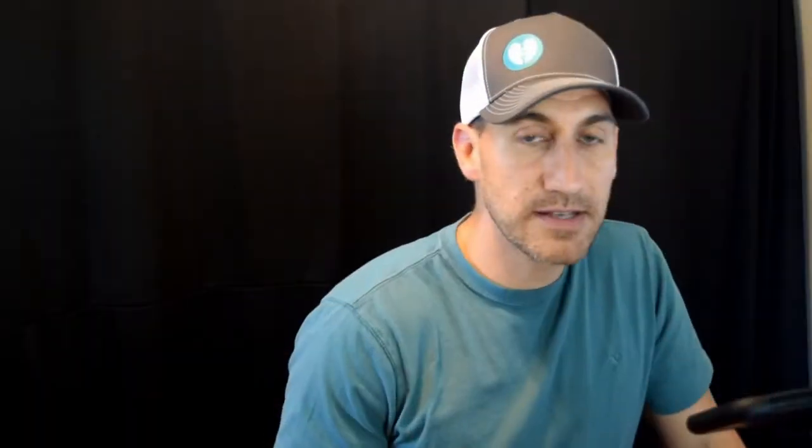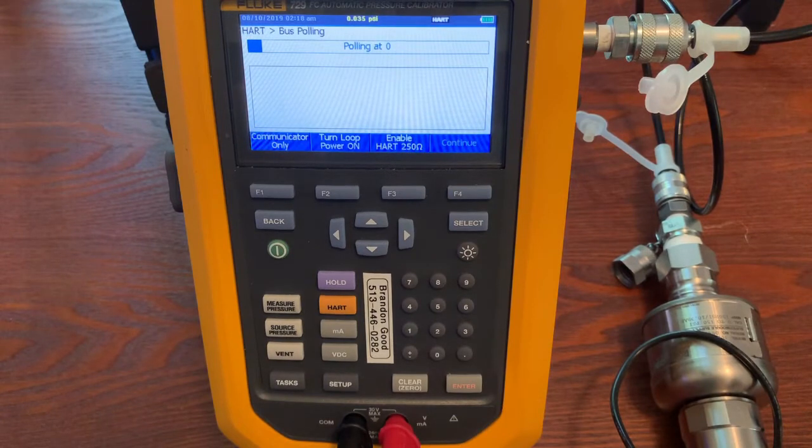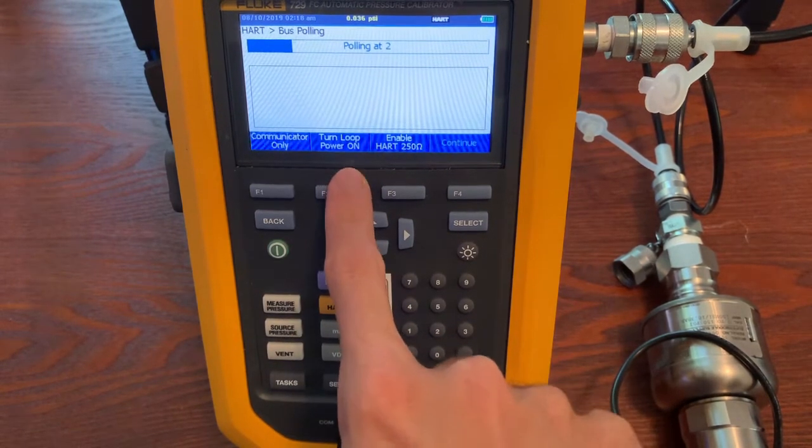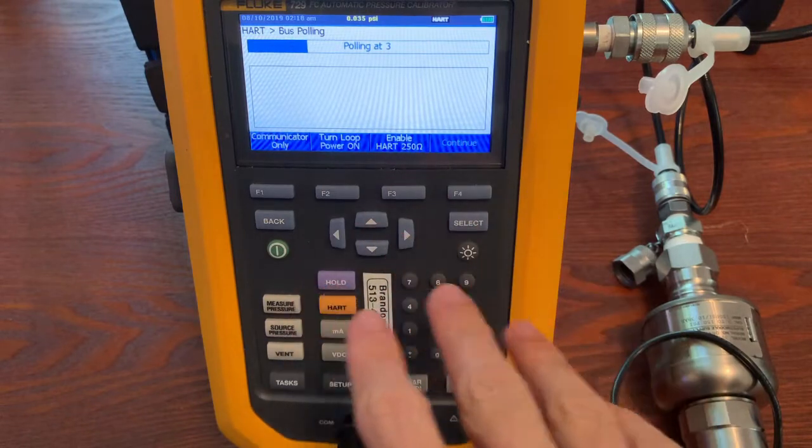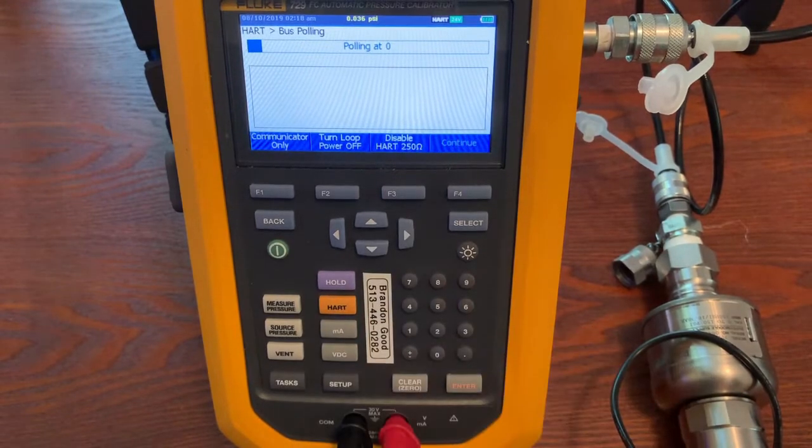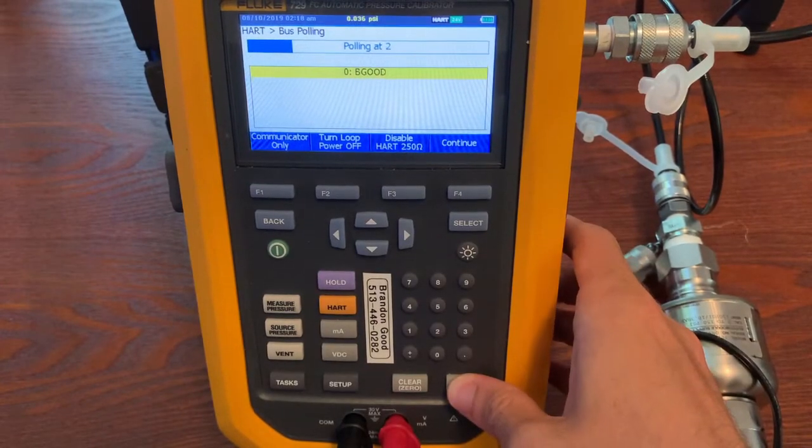The first thing we're going to do if it is a HART device like this one or like any other HART device in the field, you're going to want to hit the HART button so that the instrument itself can go look and gather all the information from the transmitter and know where we're calibrating. So we're going to hit HART. It processes here for a little bit. You can see it's not seeing anything. Well, it's because of a couple of things. Loop power is not on. If this was hooked up to a system and it already had its own loop power, we wouldn't have to do that. But we have to turn on loop power and we need to enable the 250 ohm resistor. Once we do that, it'll pop up and mine's nicknamed after me. Brandon Good. So we can click enter or you can hit F4 to continue.